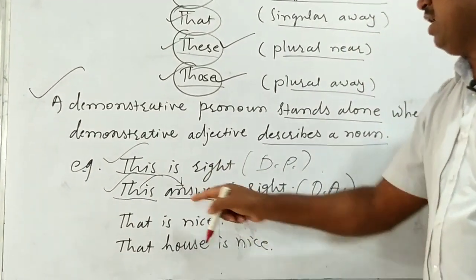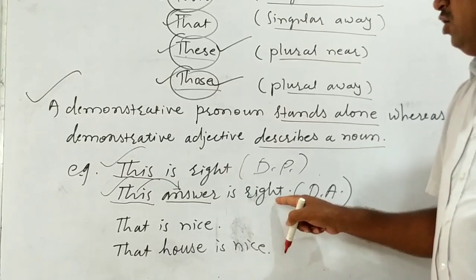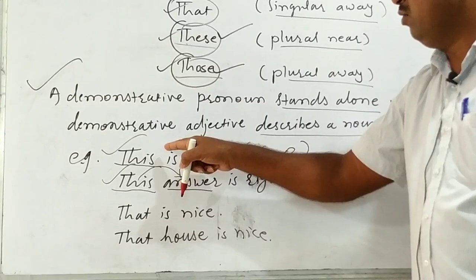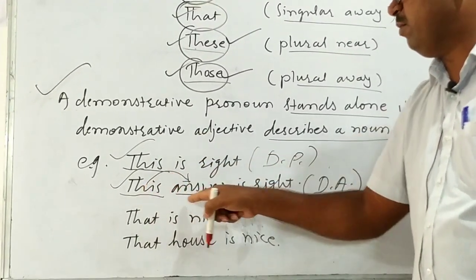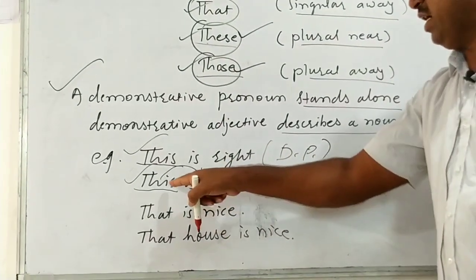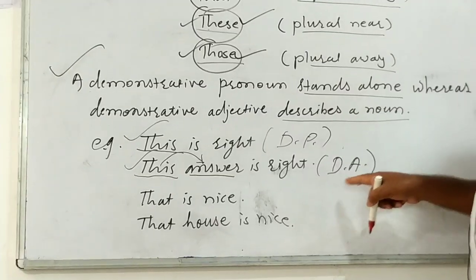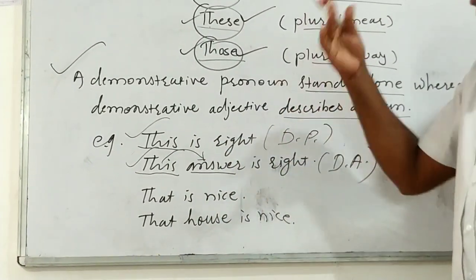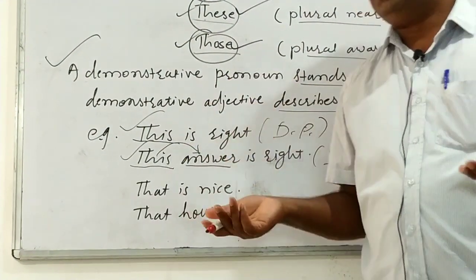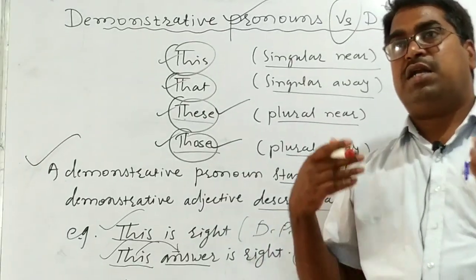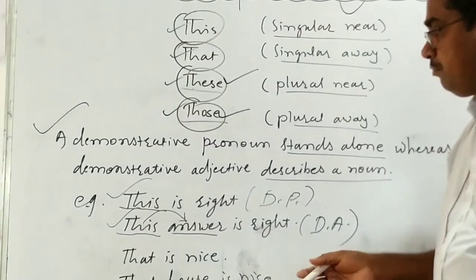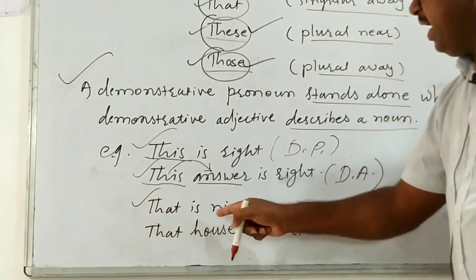So the word 'this' modifies the word 'answer' — 'this answer is right.' Though 'this' looks the same in both examples, in the first example it functions as a demonstrative pronoun, whereas in the second example it functions as a demonstrative adjective, because it is giving more information about the answer — this answer, not that answer. Demonstrative adjectives indicate whether the thing is near or away.